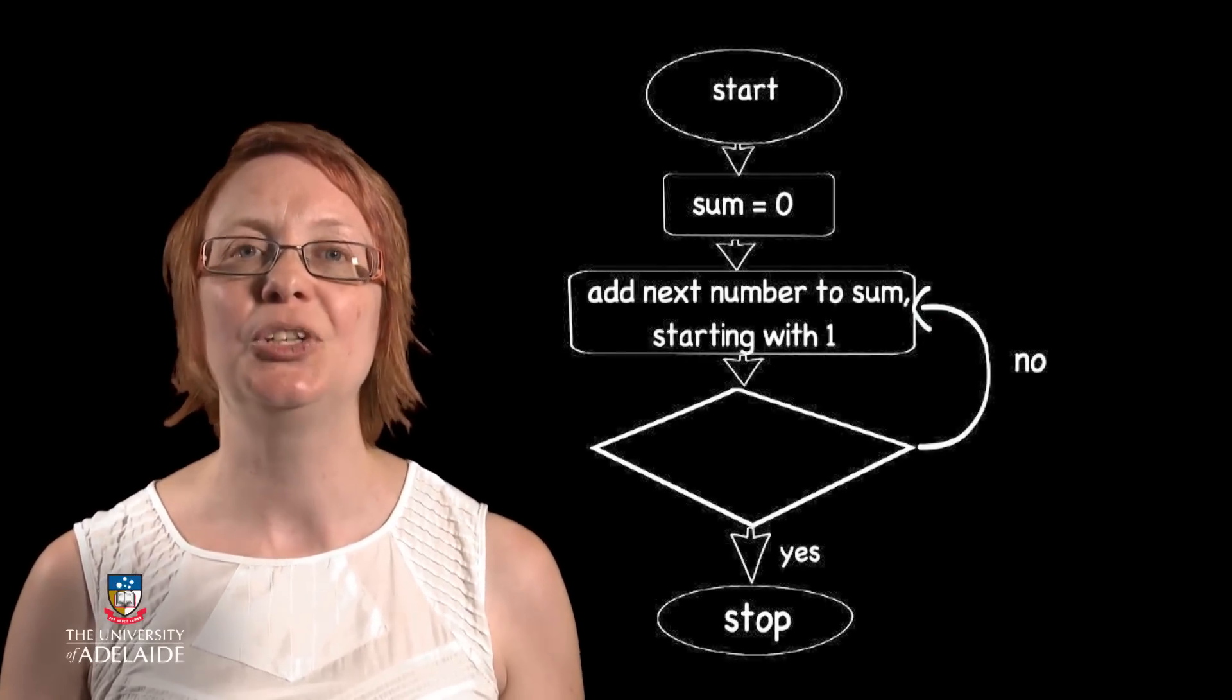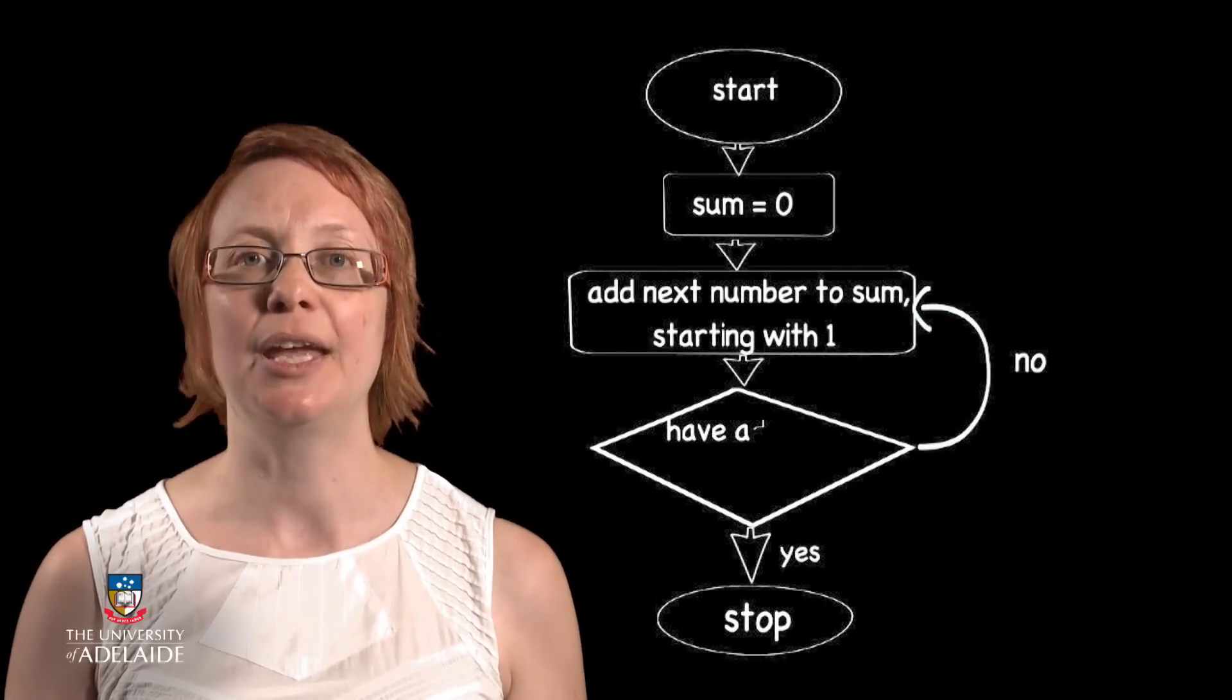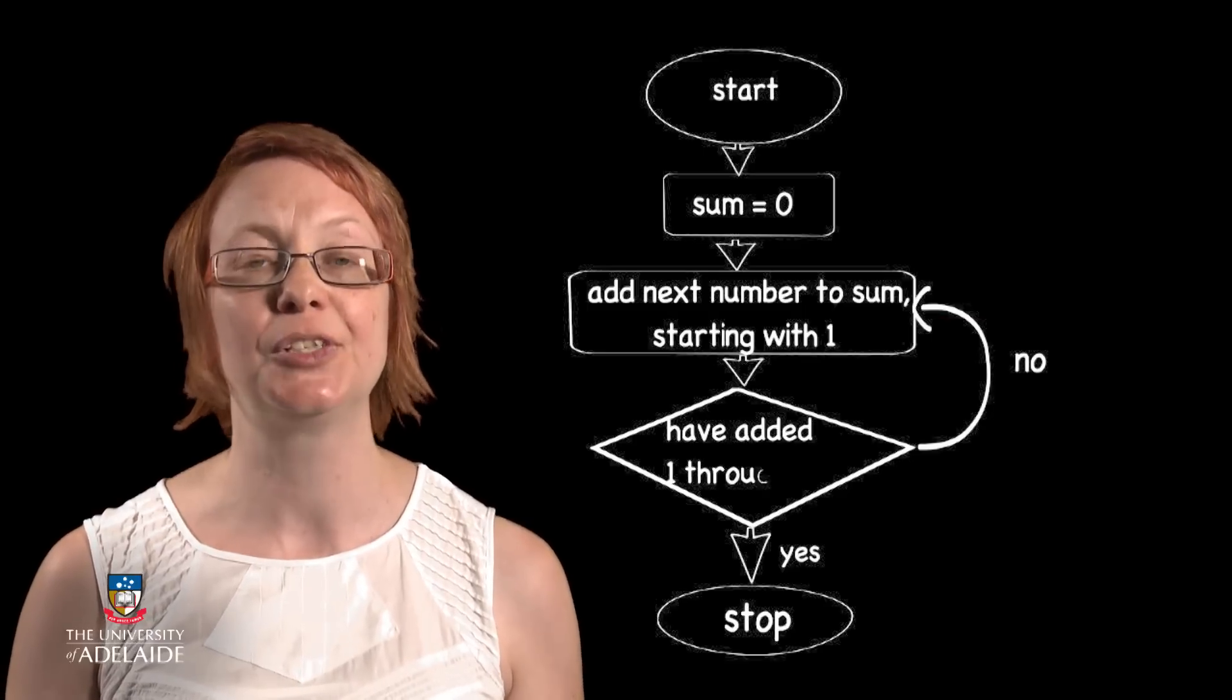What if we wanted to modify our flowchart so that it added all of the numbers in the sequence 1 through to 10? What would we have to change? In this case, we could change our condition, so that it kept repeating our loop in the flowchart until we had added 10.